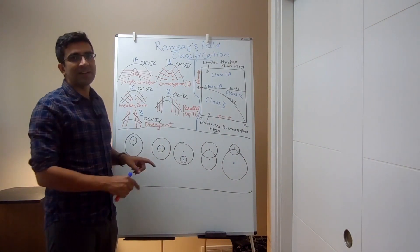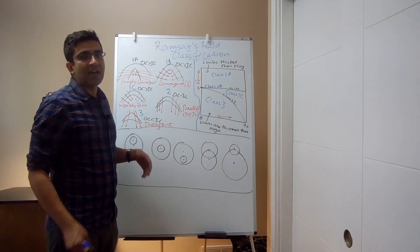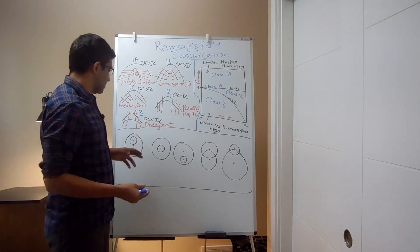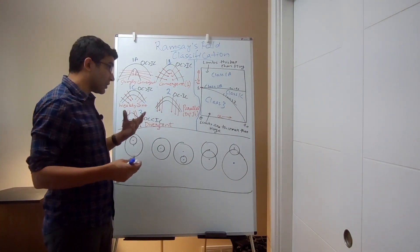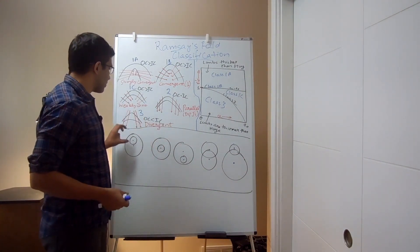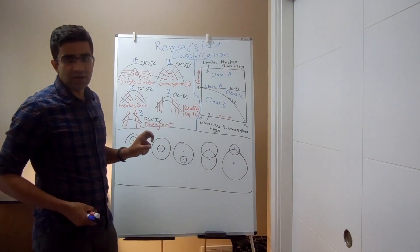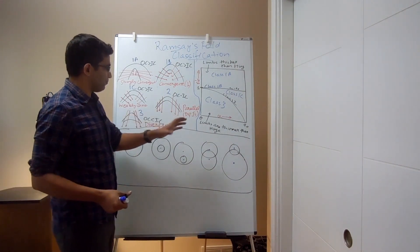This bigger circle has less curvature compared to this smaller circle.